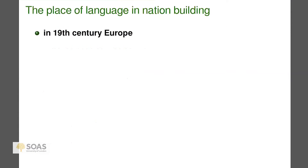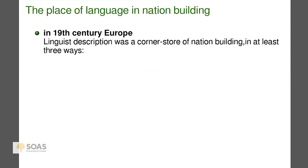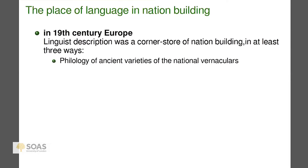I'll look very briefly at the relationship of language to nation-building, comparing 19th century Europe with modern Asia as a context for fieldwork and language documentation. In 19th century Europe, linguistic description was a cornerstone of nation-building in at least three ways. First, philology of ancient varieties of national vernaculars — think of the Germanic sagas — one way you were a nationalist was to look at medieval poetry in your vernacular.